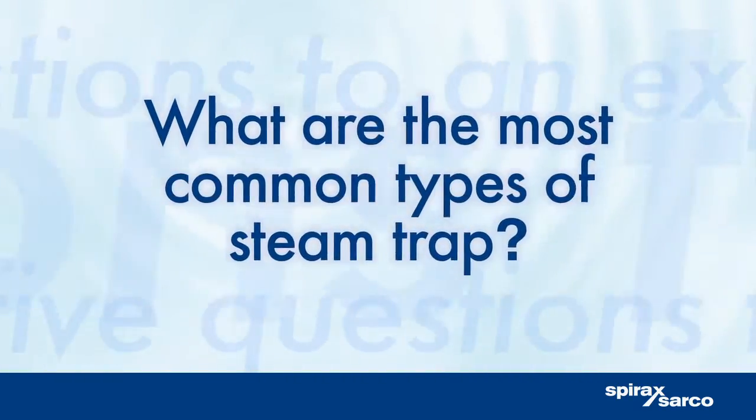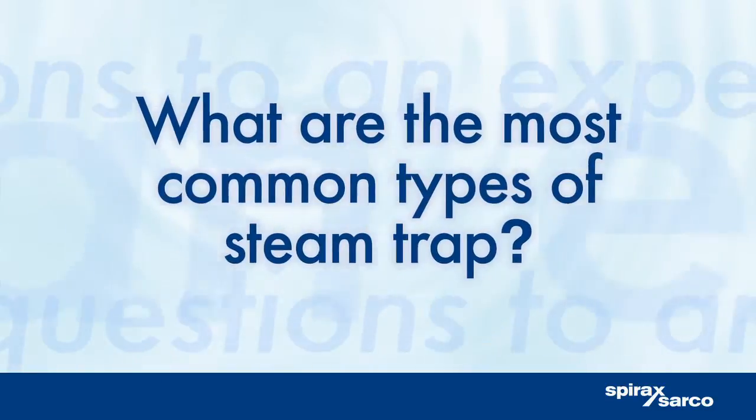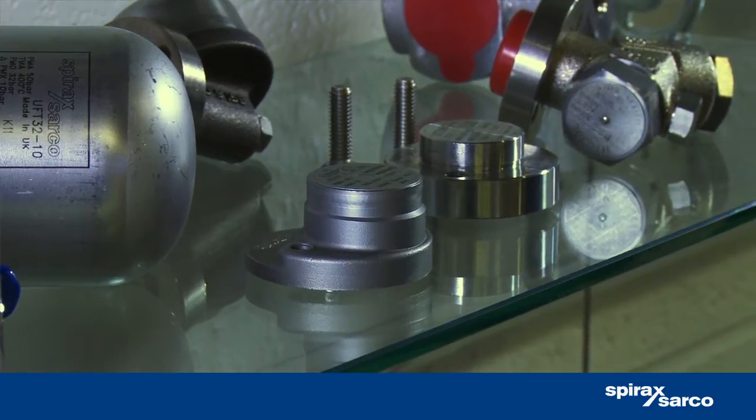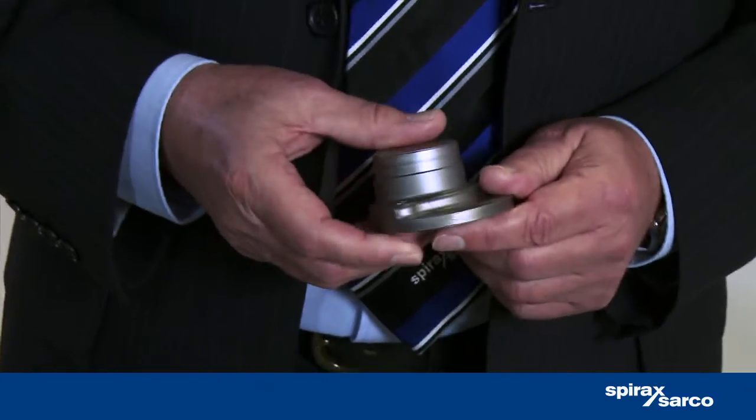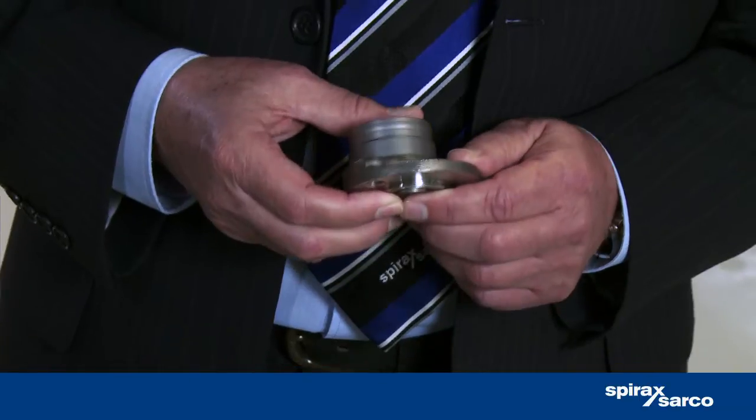Getting the right steam trap for the application ensures the highest productivity and energy efficiency. What are the most common types of trap? Thermostatic steam traps operate by using the temperature difference between steam and condensate. These traps are great for applications such as trace heating and small steam heating packages.